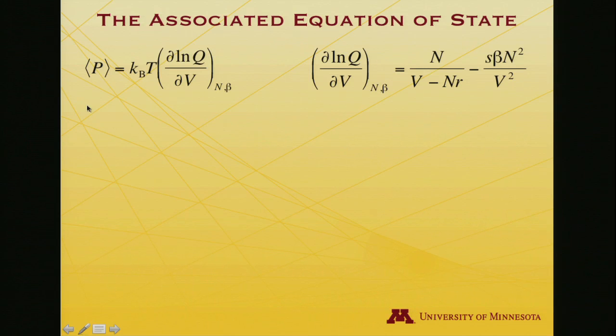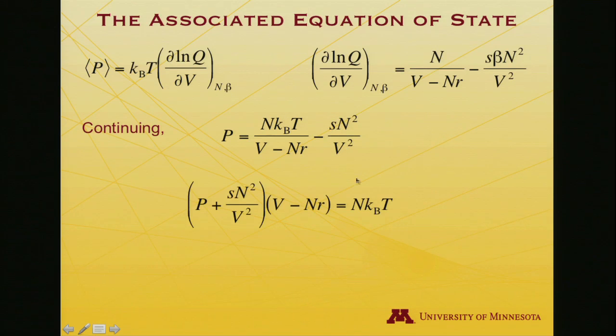Now that I have that in hand, I can finish solving for the pressure. Since pressure is kt times that partial derivative, and this was the partial derivative we just did from the last slide, I rearrange that. I get pressure equals n kt over v minus n r. Here, multiplying kt times beta, beta is 1 over kt, so it just goes away. I'm left with only sn squared over v squared. I can rearrange that a bit. I'll move this term over to the other side, so I'll get p plus sn squared over v squared. I'll multiply both sides times v minus n r. So here's the multiplication over here, and that eliminates the denominator over there.